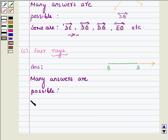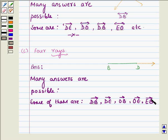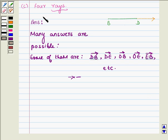Some of them are: first is DB, and how do you denote a ray? With an arrow. Second is DE, also OB is a ray, OE is also a ray, EB is also a ray, and so on. So this completes.